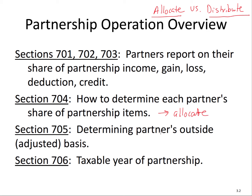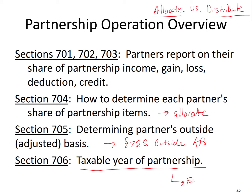Section 705 deals with how we calculate the partner's outside adjusted basis. Under Section 722 in a previous topic, we covered the outside adjusted basis on contribution or formation. This section addresses how we determine it after that initial contribution. Section 706 deals with the taxable year of the partnership — and remember, under the entity theory, there's only going to be one taxable year, not a separate year per partner for the items flowing through.